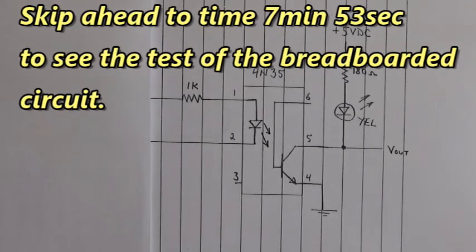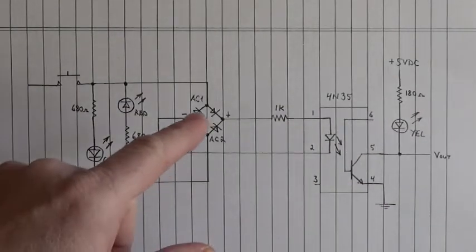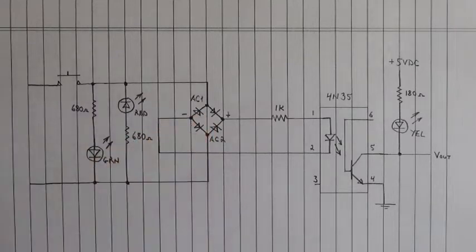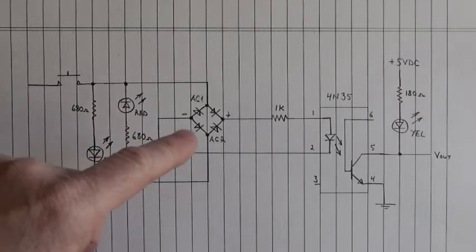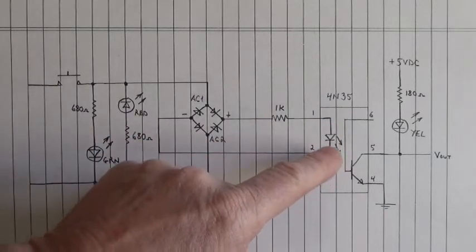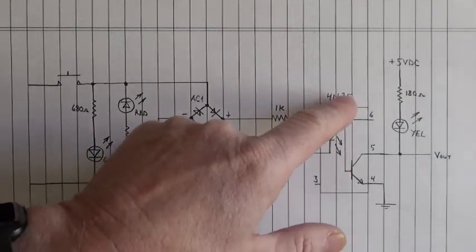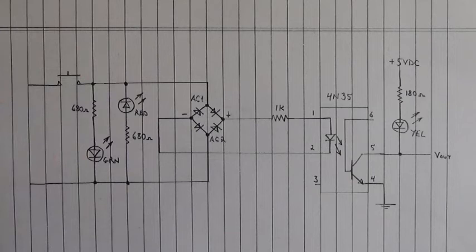Let's design a circuit that will allow me to accidentally reverse bias that input. Here's the circuit — the bridge rectifier is the key to this circuit right here. Regardless of whether we have plus 12 volt DC up here and ground down here, or ground up here and 12 volt DC down here, the bridge rectifier corrects the polarity into the anode-cathode of that optocoupler's LED.